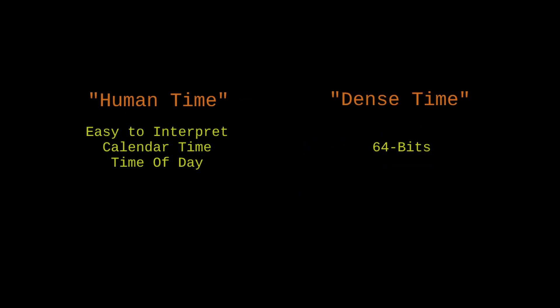One type will break time information out into the calendar and time-of-day denominations that we use for time normally — so that'll have year, month, day, hour, minute, second, maybe milliseconds or something like that. And then for the second time type in that category, I'll use something that smooshes all that information down into 64 bits.